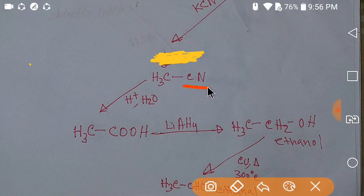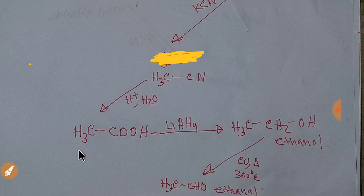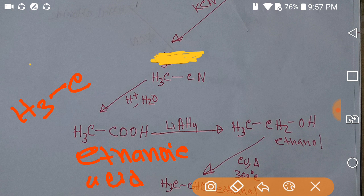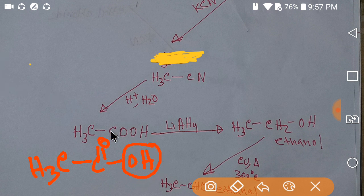When you hydrolyse this ethyl nitrile with acid and water, the CN group of ethyl nitrile converts to a COOH group — that is, ethanoic acid. This is the structure of ethanoic acid, which has one methyl group and one carbonyl group.